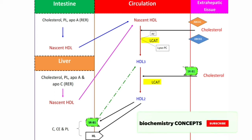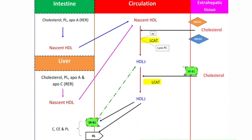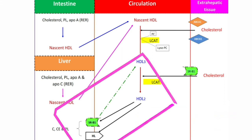This reformation of HDL3 from HDL2 may take place in two ways. One is, HDL3 is reformed from HDL2 after delivery of cholesterol esters to the liver via the scavenger receptor B1. Or, HDL3 may be reformed by the hydrolysis of the phospholipids and triacylglycerols present in the HDL2 by hepatic lipase.